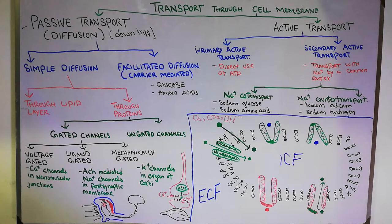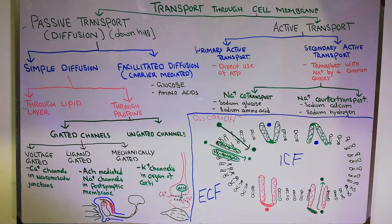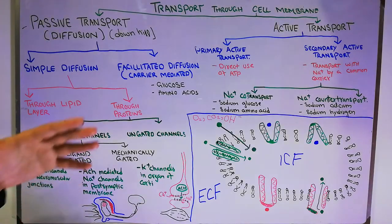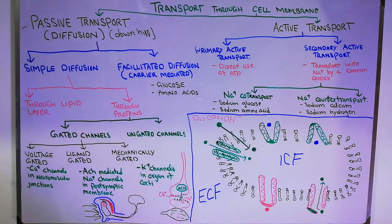This transport is very necessary to maintain homeostasis — keeping similar conditions inside and outside the cell. When the cell is able to function normally, the tissues, organs, systems, and the human body will also be able to function normally. So let's discuss how things are transported into and outside the cell.